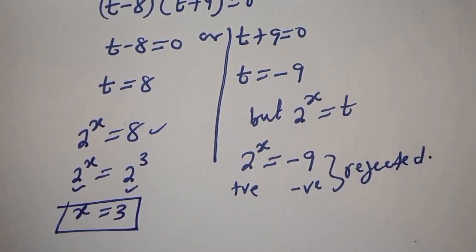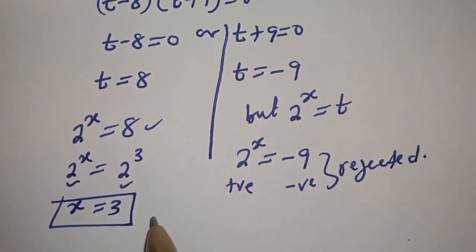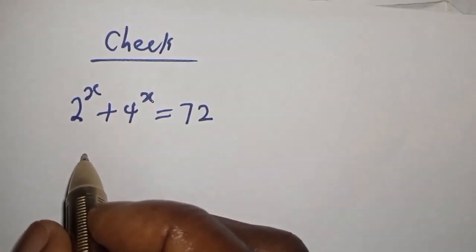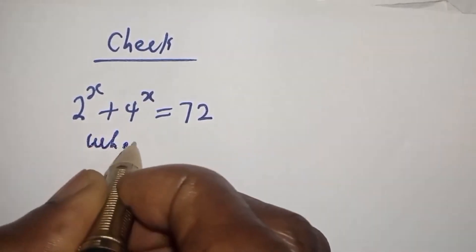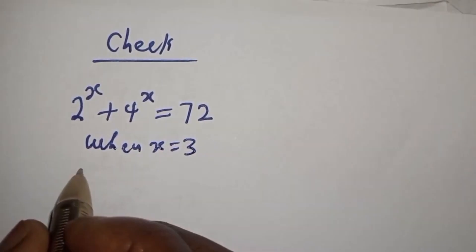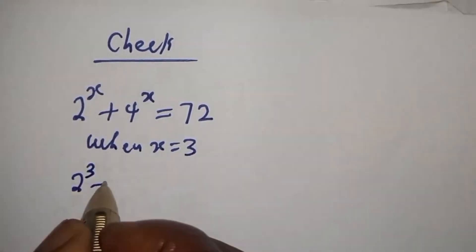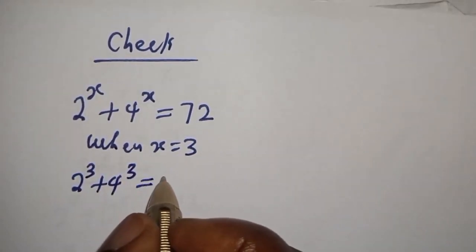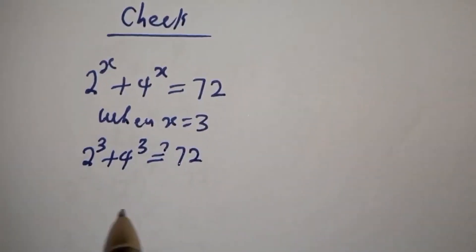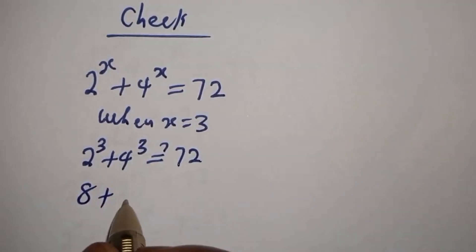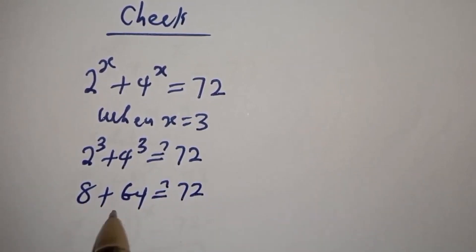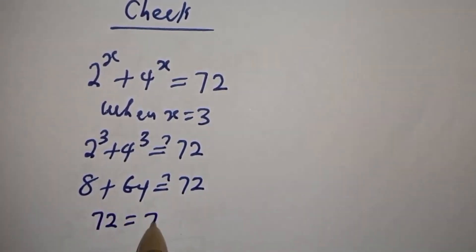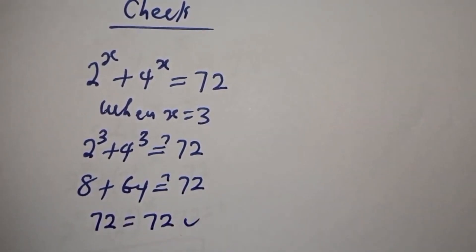This is the final answer. We can check to confirm: 2 raised to power s plus 4 raised to power s equals 72. When s equals 3, this is 2 raised to power 3 plus 4 raised to power 3, which must equal 72. Then, 2 cubed is 8 and 4 cubed is 64. So 8 plus 64 equals 72, which satisfies the equation at s equals 3.